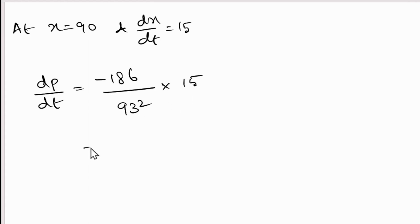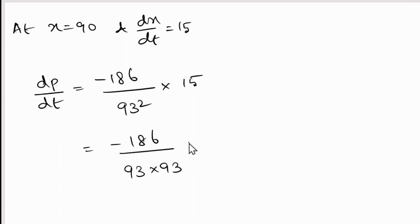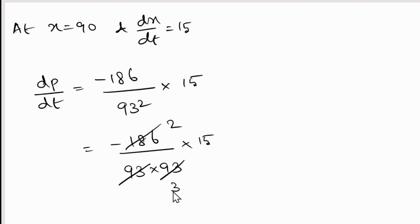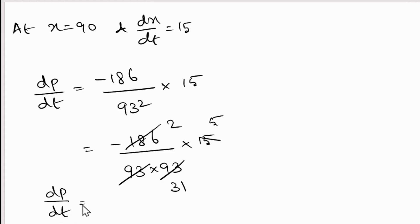Simplifying: -186 / (93 × 93) × 15. Since -186 = -2 × 93, this cancels one factor of 93, giving -2/93 × 15 = -30/93. Dividing numerator and denominator by 3 gives dp/dt = -10/31.